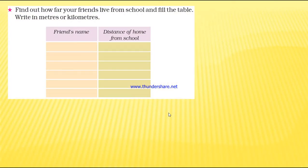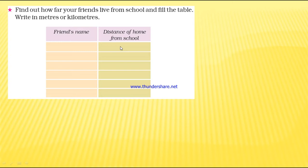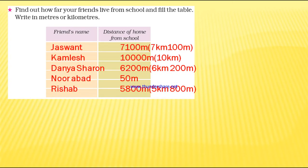Find out how far your friends live from school and fill the table. Write in meters or kilometers. At least five friends' names and their distance from school to home or home to school. That distance we can get from the children. Here an example is given — five children's names and their distance from home to school.